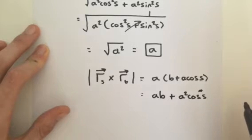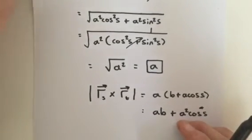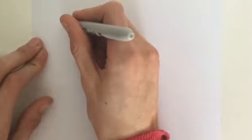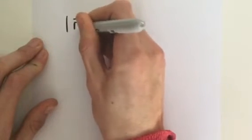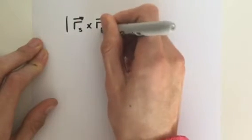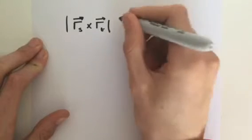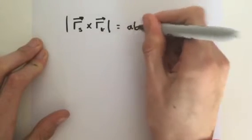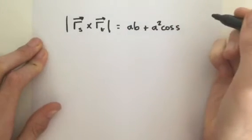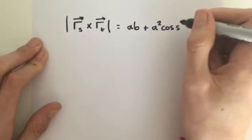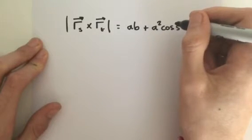So our final thing we need to do is calculate our surface integral, actually do some integration. I'll write it down once more, we have the magnitude of our cross product, and this gave us ab plus a squared cosine of s. We need to integrate the double integral over our region defined by s and t.